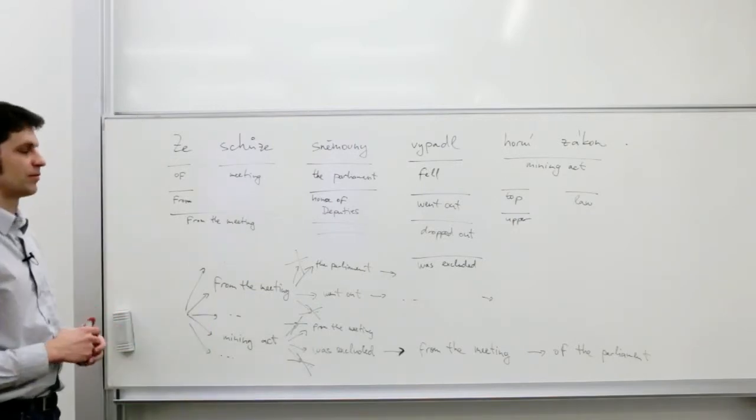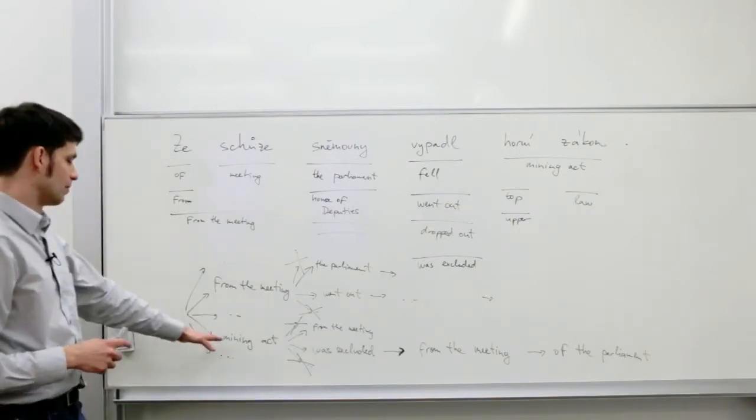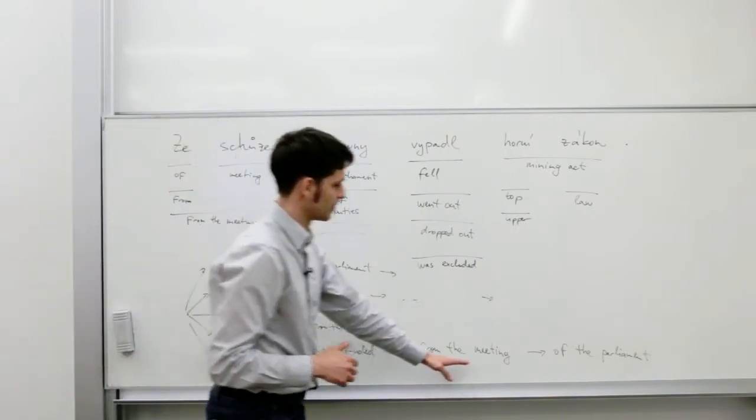So the output that we would like to get from the decoder would be mining act was excluded from the meeting of the parliament.